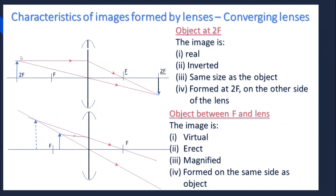Next, the object is placed at 2f. The first ray passes through the optical center undeviated, and the second ray is parallel to the principal axis and is refracted through the principal focus, converging at a particular point. The image formed is real, inverted, the same size as the object, and formed at 2f on the other side of the lens.